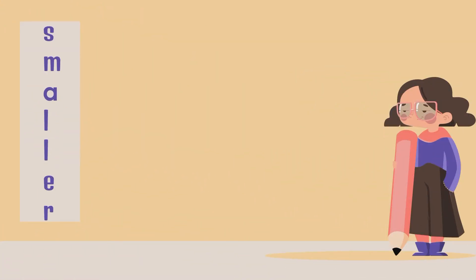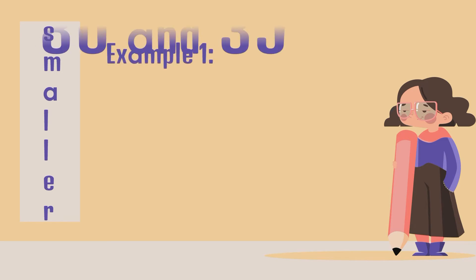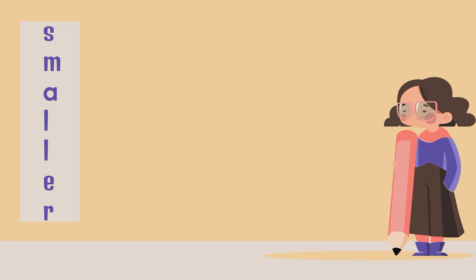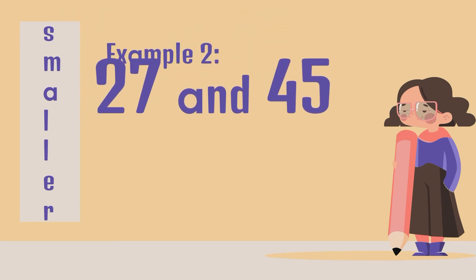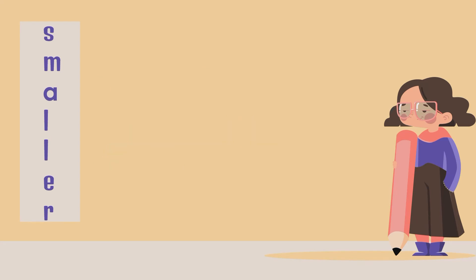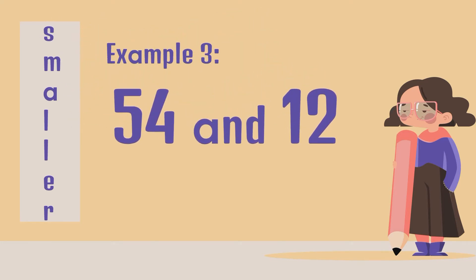Let's see if you know which number is smaller. Example 1: We have 80 and 35. Cross out the smaller number. 35. Good job. How about example number 2? 27 and 45. Cross out the smaller number. 27. Very good. Example 3: We have 54 and 12. Which number is smaller? 12. Very good.